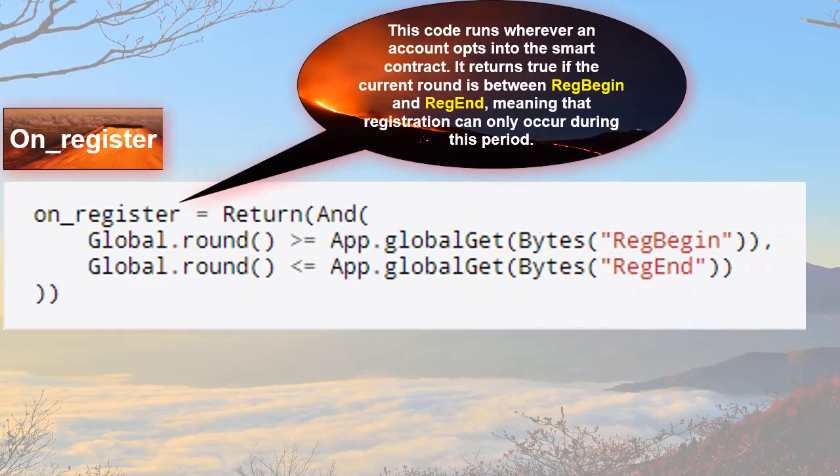This code runs whenever an account opts into the smart contract. It returns true if the current round is between RegBegin and RegEnd, meaning that registration can only occur during this period.